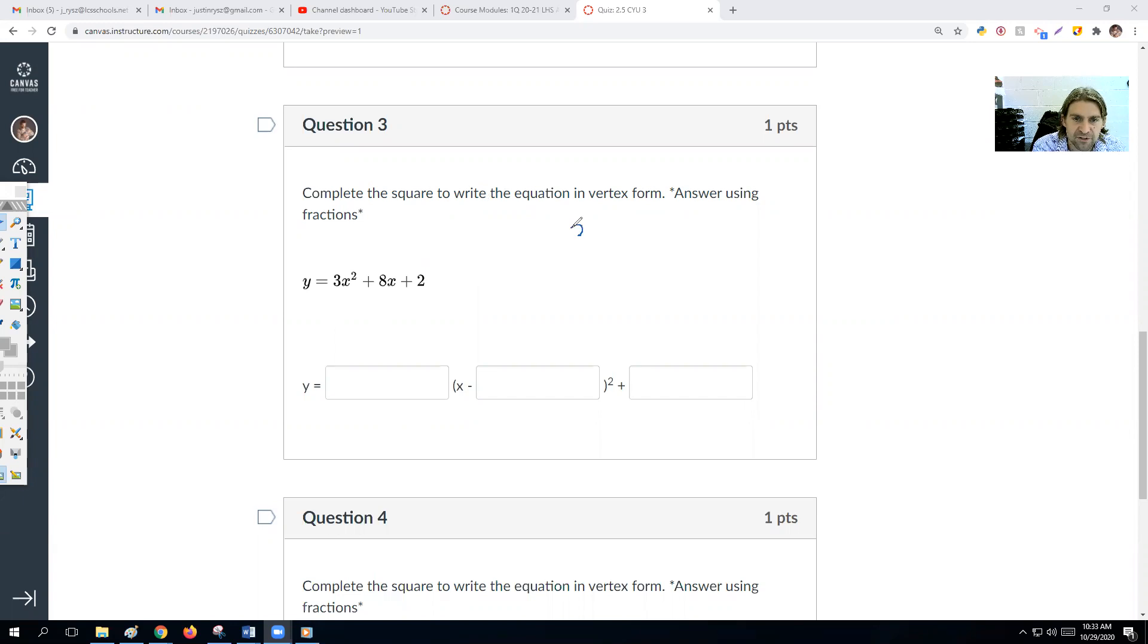So normally we're going to move that 2 over to the other side. So we got 3x squared plus 8x plus blank equals negative 2 plus blank. Now since we do have a number in front, let's factor that out. So this would be an x squared plus, if I take 8 divided by 3, that's 8 over 3 plus blank. So maybe we got to do a little bit of work on the side. First thing I'm going to do is cut this in half. 8 over 3 cut in half is 4 over 3. And then we need to square that number. That'd be 16 over 9.